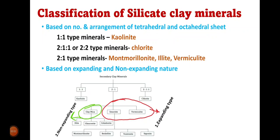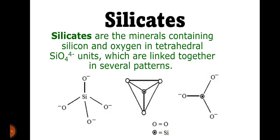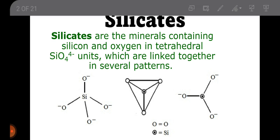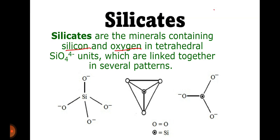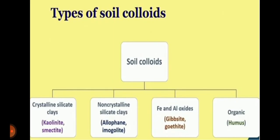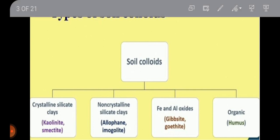In this lecture we will study classification of silicate clay minerals. Silicates are minerals containing silicon and oxygen in tetrahedral units which are linked together in several patterns. Silicate clay is a type of soil colloid and may be crystalline or non-crystalline in nature.